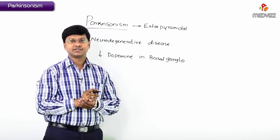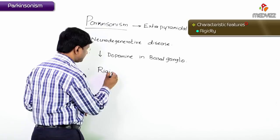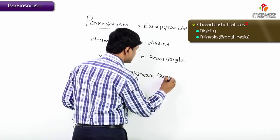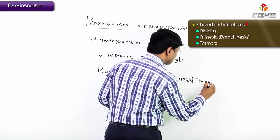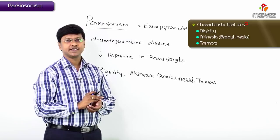The characteristic features of Parkinsonism are rigidity, akinesia — also called bradykinesia, which is the slowness of movements — and the presence of tremors. The type of tremors here are resting tremors. So these three are very important features: rigidity, bradykinesia, and tremors.